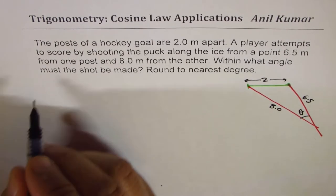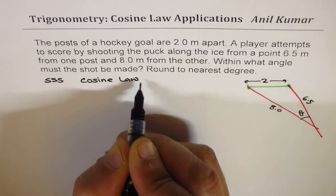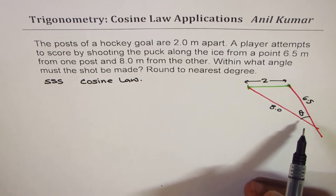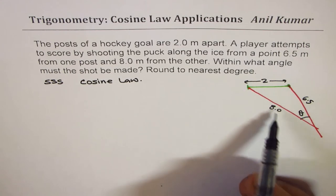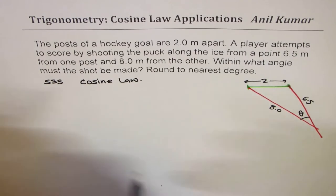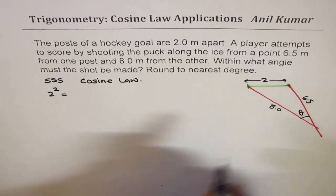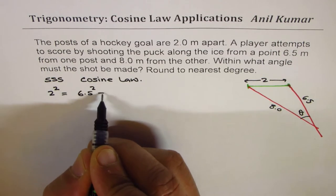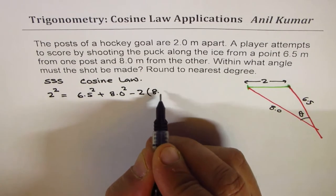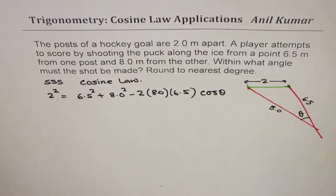Whenever three sides are given — side, side, side — we should use cosine law. To find this particular angle theta, we can write the expression. The side opposite to theta, which is 2 squared, is equal to the sum of the other two sides squared: 6.5 squared plus 8.0 squared, minus 2 times 8.0 times 6.5 times cosine of theta. That is the cosine law.